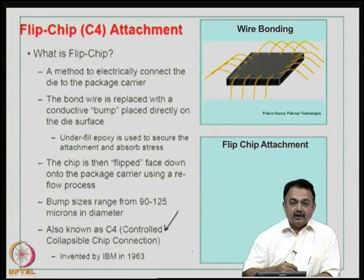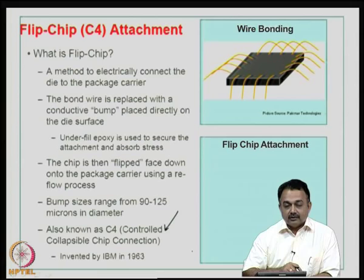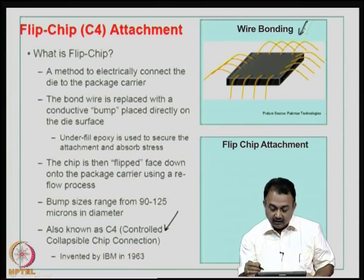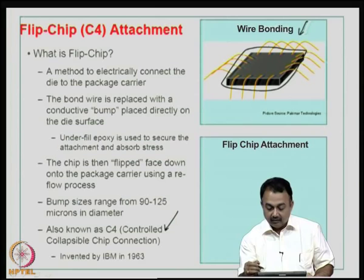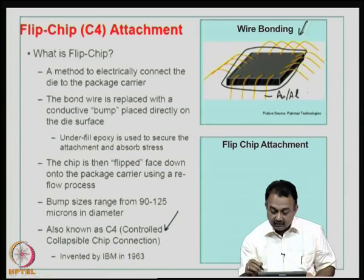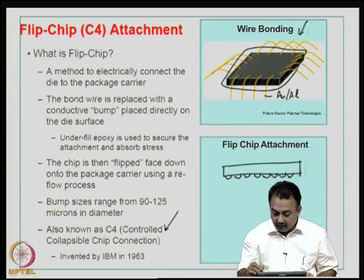Wire bond has been used for a very long time in all your DIP packages and QFP packages where the profile is very high, but today with low profile components you are not able to use wire bond because it occupies more space and more volume. Compared to wire bonding, the bonding of wire bonding is at the periphery and these are the gold or aluminum wires attached to the substrate. The flip chip process is flipping the chip over, and these have got bumps. What is the size of these bumps and what is the material?